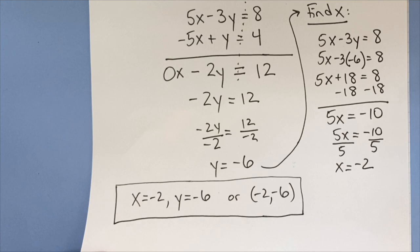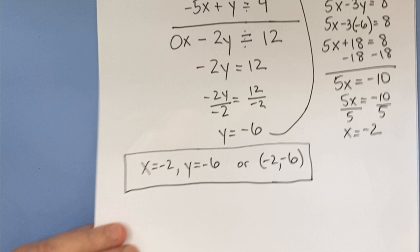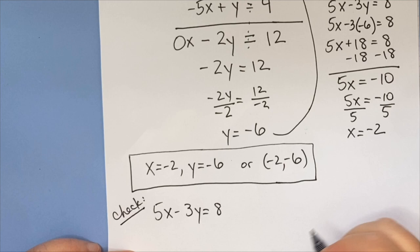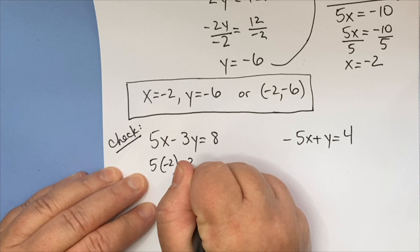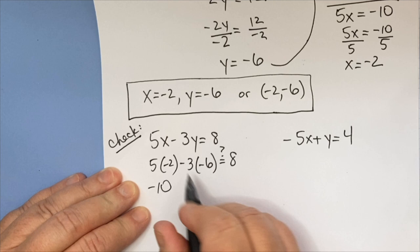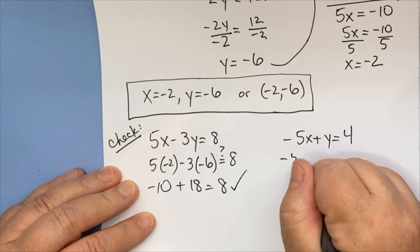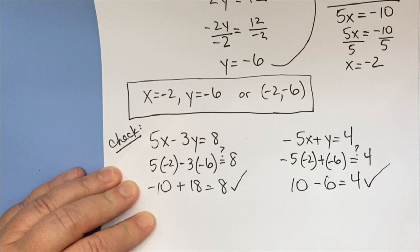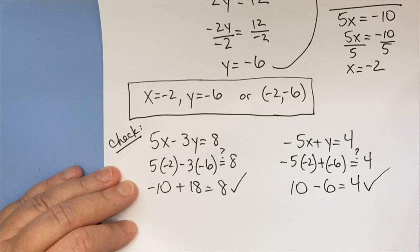Now let's go ahead and check. So 5x minus 3y equals 8. And then I also need to check negative 5x plus y equals 4. So 5 times negative 2 minus 3 times negative 6. Is that going to give us 8? So this is negative 10 plus 18. That's 8. And this is negative 5 times negative 2 plus negative 6. Does that equal 4? I've got positive 10 minus 6. Yep, that equals 4. So we have checked. Everything is great. We got our answer. And so that's elimination.